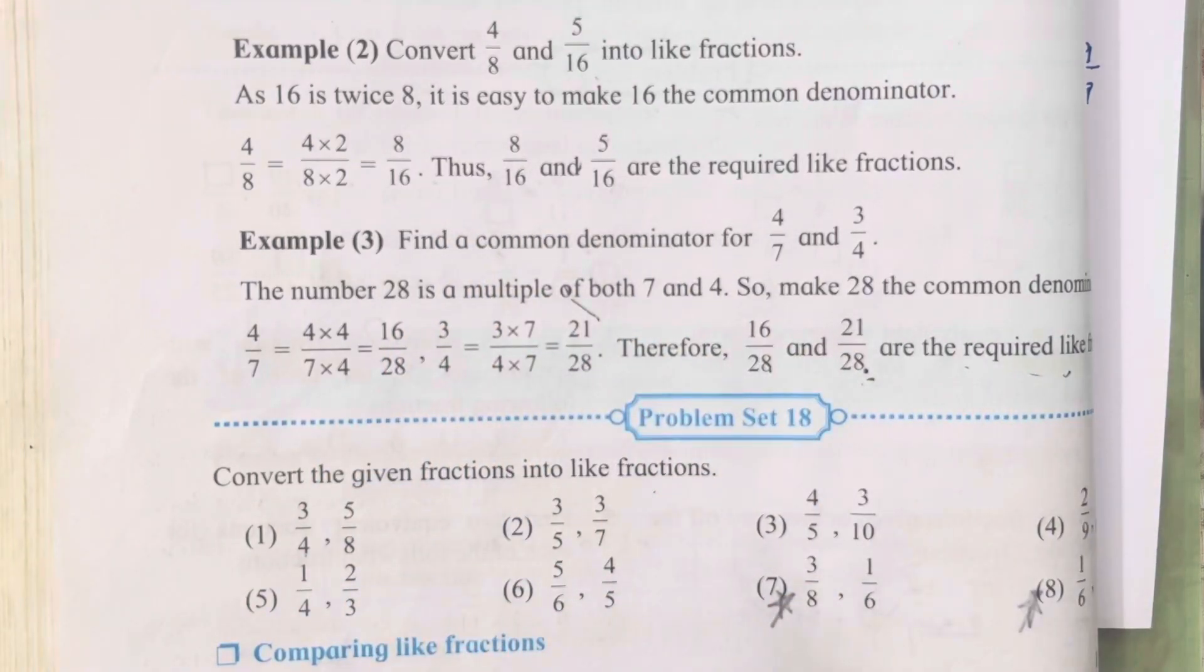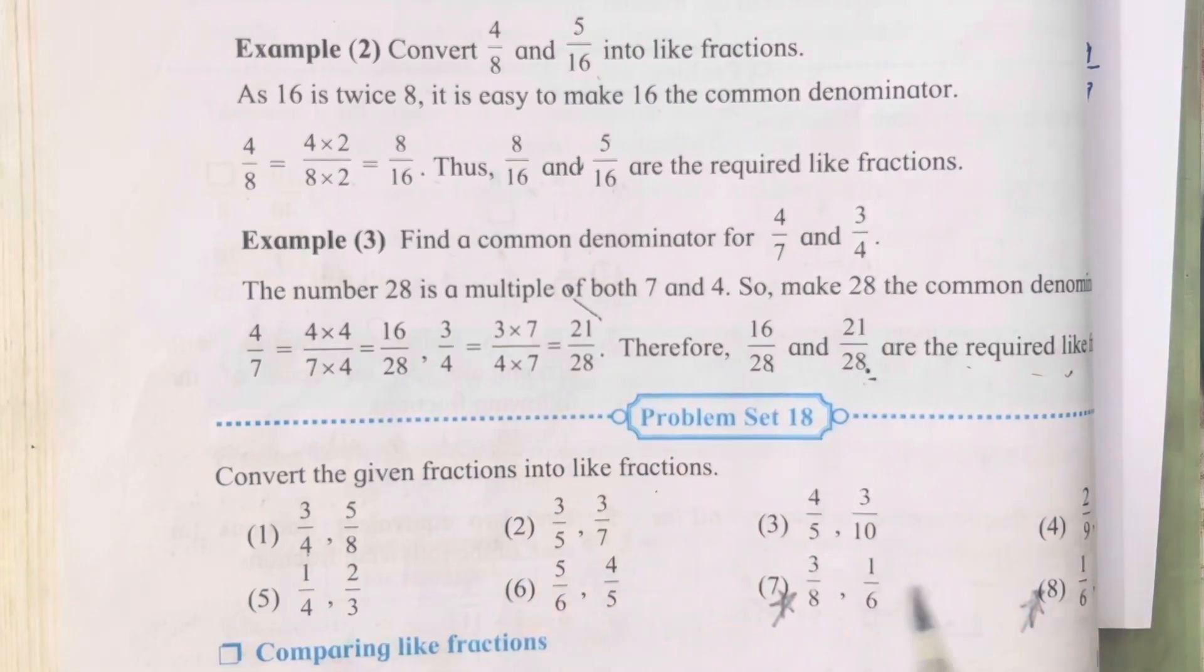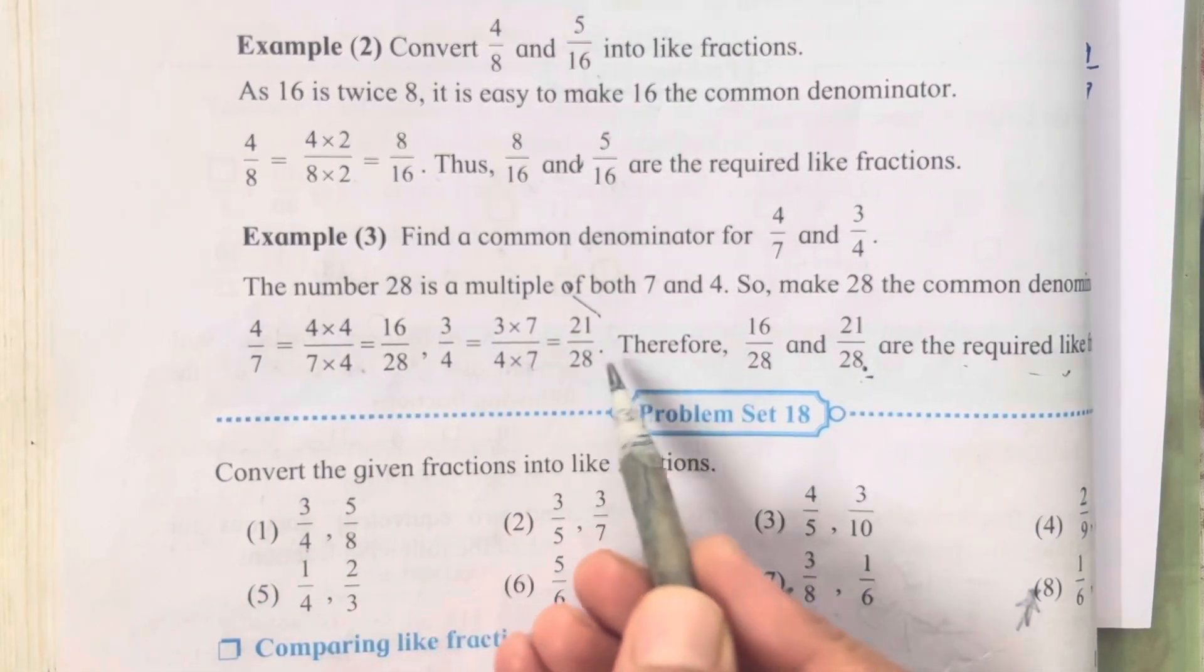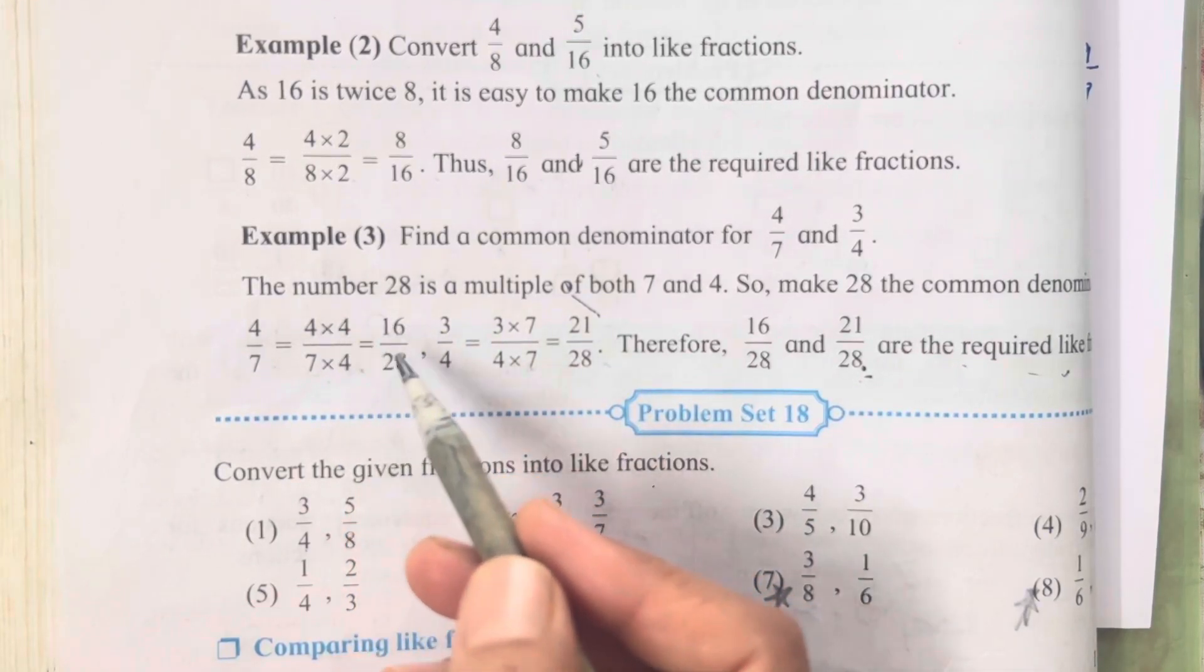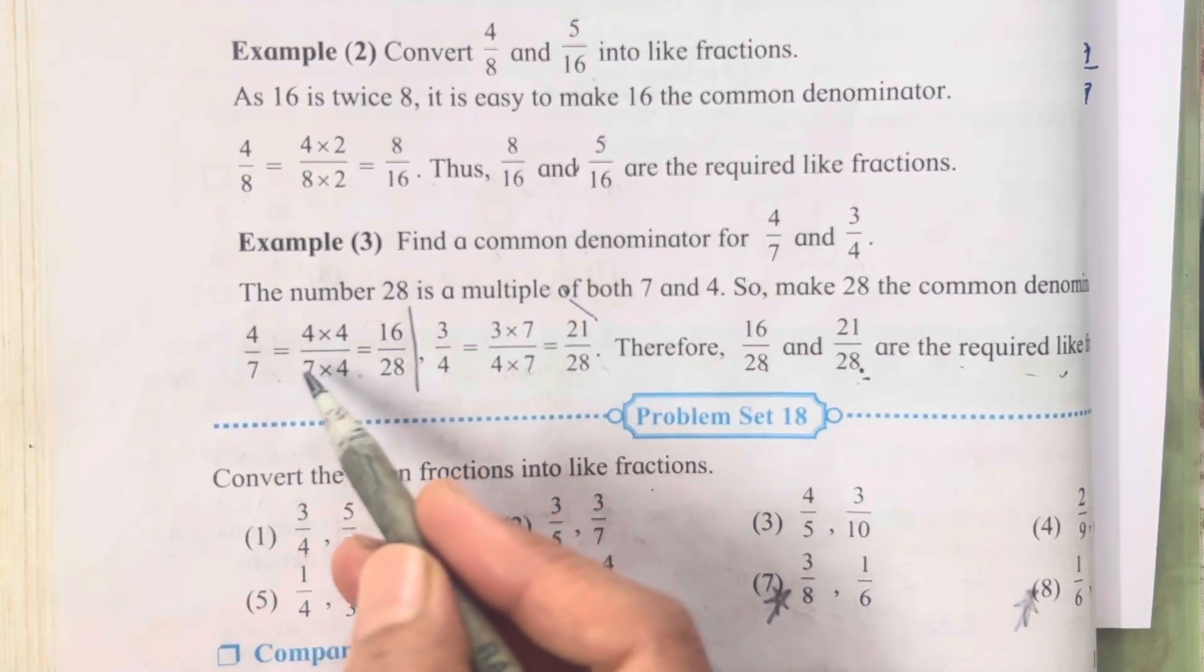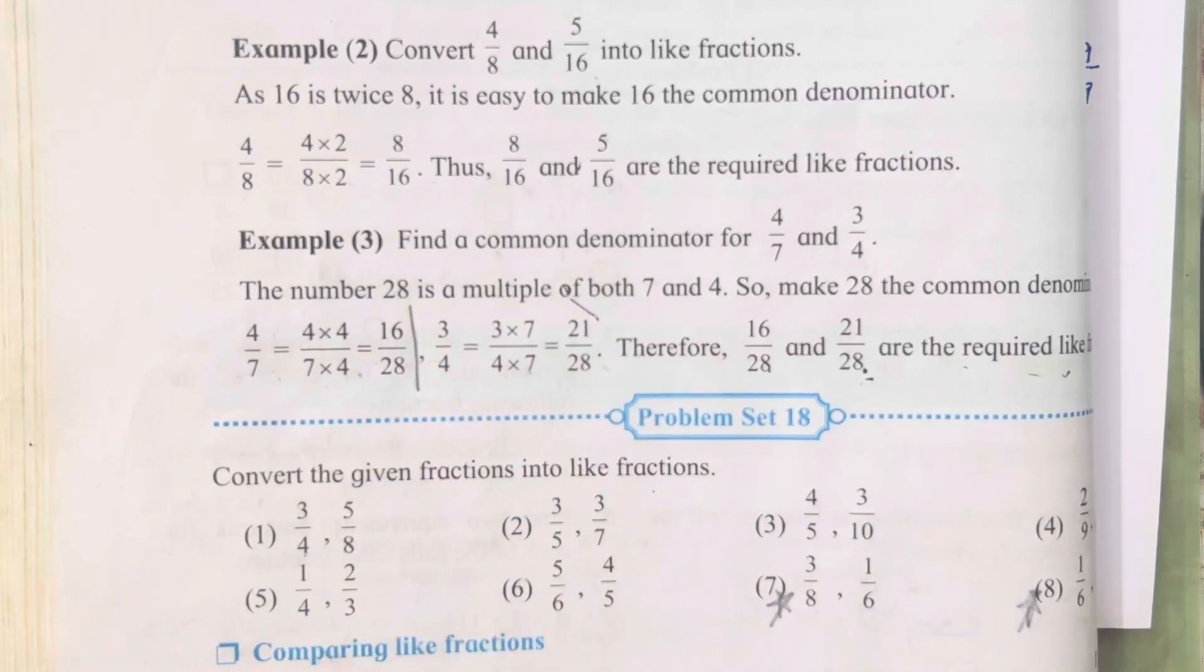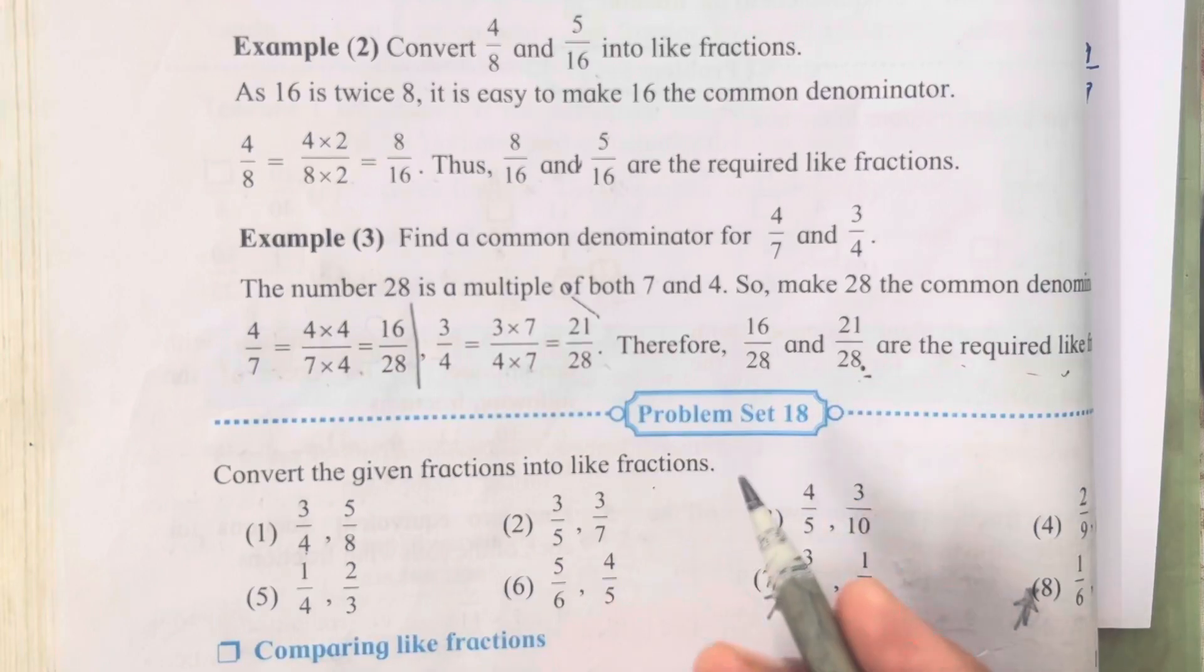Find a common denominator. Now these are the different questions that are going to be asked. Find a common denominator for 4 upon 7 and 7 upon 4. So 4 upon 7 is 28 and 7 into 4 is also going to be 28. We have done the same method, we just did it vertically. That's the only difference that has been done over here in this question.